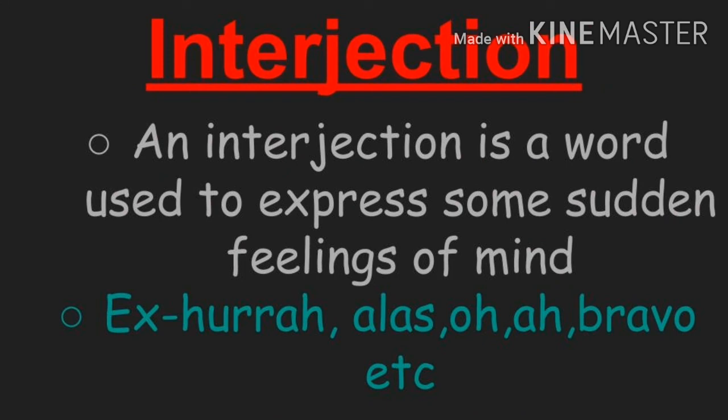The last one is interjection. What is an interjection? An interjection is a word used to express some sudden feelings of mind. Examples: Hurrah, Alas, Oh, Ah, Bravo, etc. These are words suddenly spoken by us when we are surprised, sorrowful, or happy. When in surprise, sorrow, or happiness we suddenly speak a word, that word is an interjection.